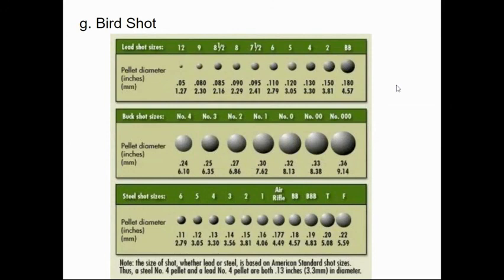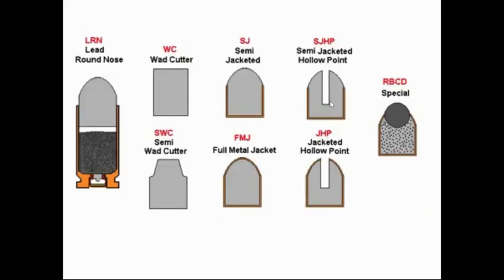When talking about types of shotgun ammunition, we discuss the pellets inside the shell — called shot. There are many different types: birdshot tends to be smaller pellets, buckshot tends to be larger. You may also see the term wad cutter, which is mostly used for target practice or competition shooting.